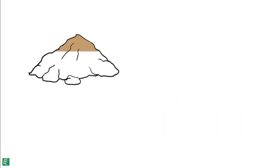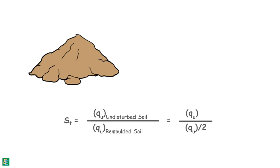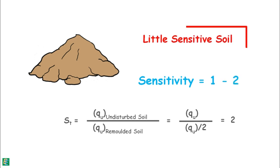Then there are soils which lose up to half of their strength upon remolding. Their sensitivity value may vary from 1 to 2. These soils are called little sensitive.